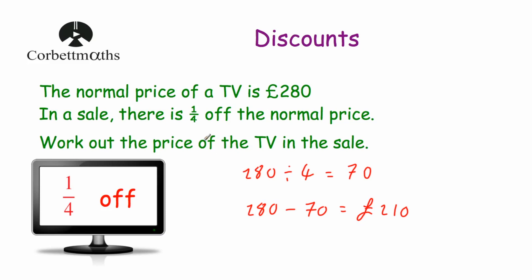That question was based on a saving whenever there's a quarter off the price. If the fraction was different — perhaps 2 fifths off — to find the saving we would divide by 5 and then multiply by 2. Whenever you're finding a fraction of an amount, if it's a nice fraction like a quarter or a third you can just divide by 4 or 3. If it's a fraction like 2 fifths, you divide by the bottom and times by the top. So with 2 fifths off £280, you'd divide by 5 to find a fifth, multiply by 2 to find two fifths — that's your saving — then take that away to find what you'd be left to pay.